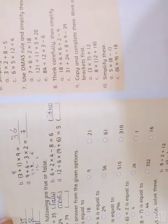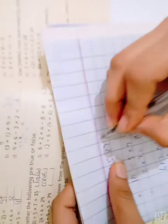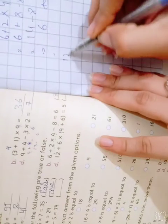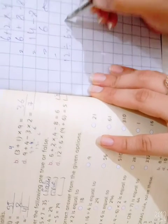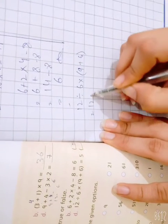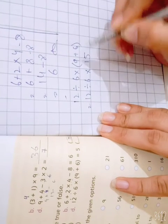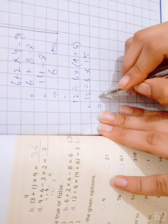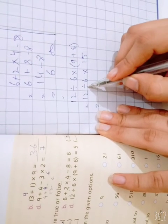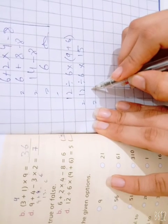Our next question is question number D. We are keeping BODMAS rule, so let's do this: 12 divided by 6 multiplied by bracket 9 plus 6. So we will solve the first bracket. 9 plus 6 is 15. Bracket solved. Following BODMAS rule, we will divide 12 by 6, which is 2.